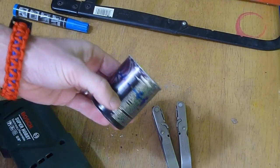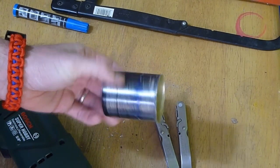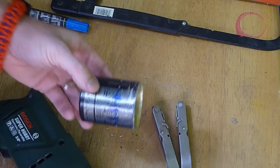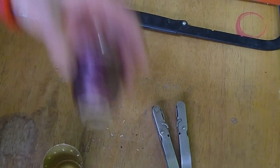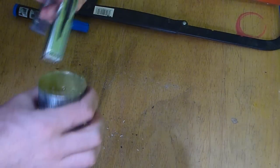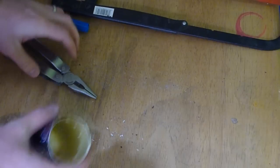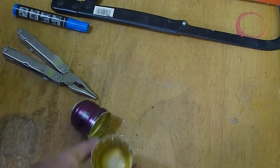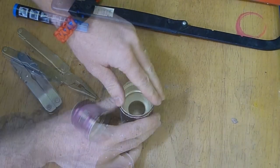All right, so we've got these all these holes cut and the next job is going to be to put these two pieces together. Sorry, before I do that you're going to want to take a file if you have one or something that can get rid of these burrs on the inside of this can.